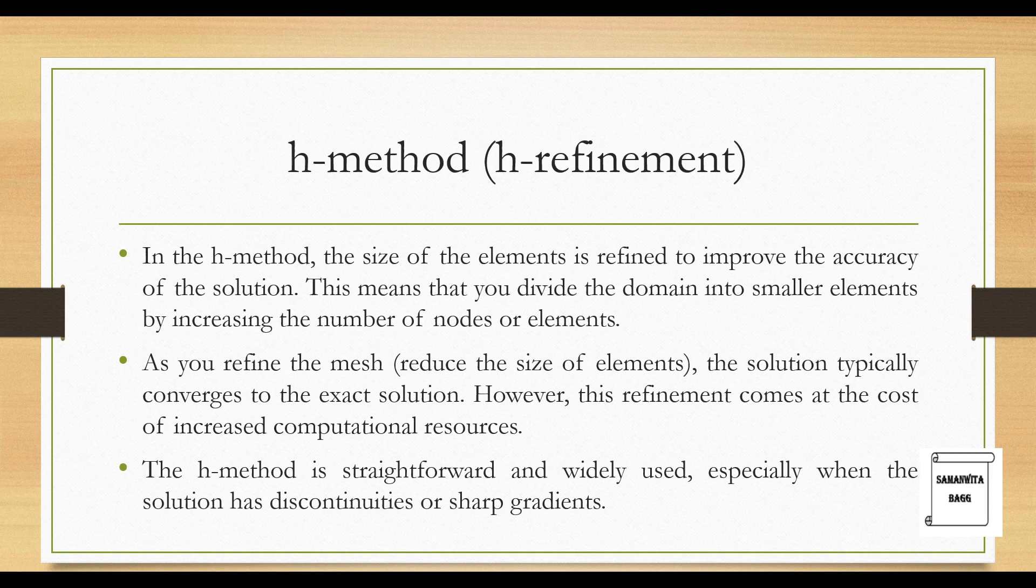First, we will talk about the H method, also called H refinement. In the H method, the size of the elements is refined to improve the accuracy of the solution. This means that you divide the domain into smaller elements by increasing the number of nodes or elements. As you refine the mesh, reduce the size of the elements, the solution typically converges to the exact solution. However, this refinement comes at the cost of increased computational resources. The H method is straightforward and widely used, especially when the solution has discontinuities or sharp gradients.